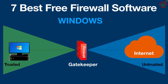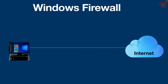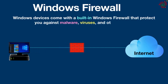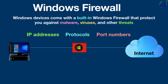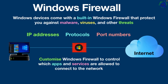Number one: Windows Firewall. Starting with the native option as a baseline, Windows devices come with a built-in Windows Firewall that protects you against malware, viruses, and other threats. It filters incoming and outgoing network traffic, blocking or allowing traffic based on IP addresses, protocols, and port numbers. You can customize it to control which apps and services are allowed to connect to the internet. It's turned on by default in all versions of Windows and supports Internet Protocol Security. Windows Firewall is good enough for most users.